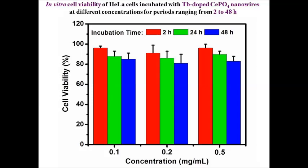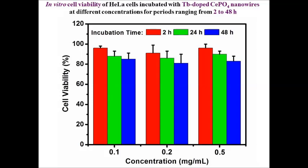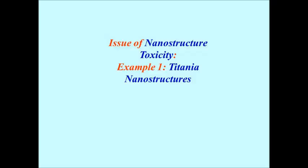These preliminary studies allowed us to think about investigating the cytotoxicity of these structures in a much more systematic fashion. For the rest of the presentation, we'll look at examples of nanostructure toxicity across various systems. The first example is TiO2 or titania nanostructures, where we examined the toxicity of 0D nanoparticles, 1D nanorods, and 3D assemblies of TiO2.